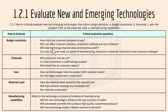There are critical evaluation questions for each of the evaluations. For budget constraints, questions include: how much are customers prepared to pay? Will the cost affect material selection, production methods, and cost of labor? Will new technology improve value and maximize profit? And can cost savings be made via speed of manufacturing, reduction in materials, reduction in size, or process redesign?